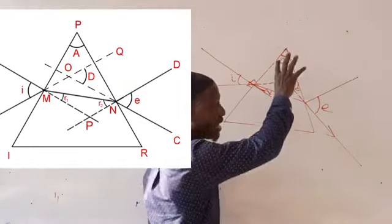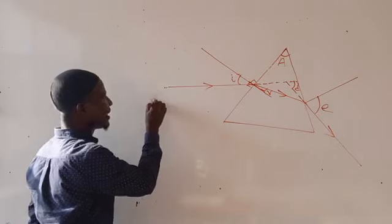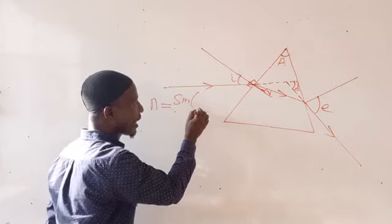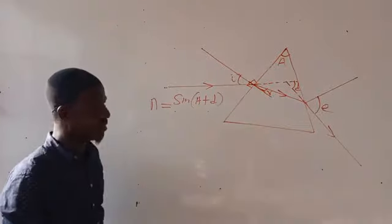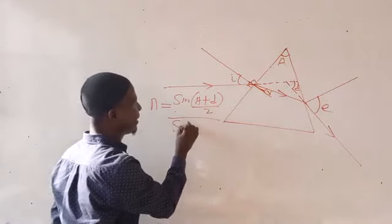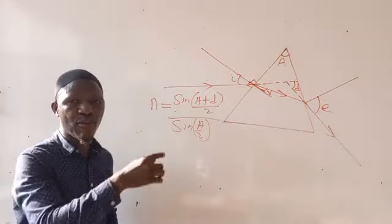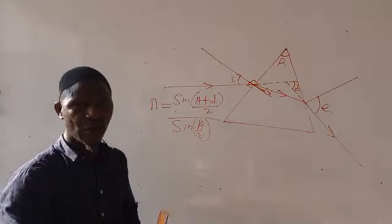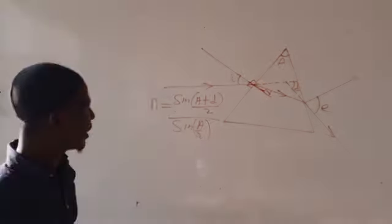How do they relate together? We have a formula that says: refractive index N is equal to sine of open bracket (A plus D) over 2, divided by sine of (A over 2), where A is the refracting angle of the prism and D is the angle of deviation. This is the formula for finding the refractive index, especially for a triangular prism.